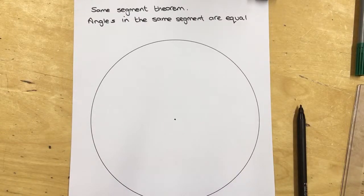We're going to have a look at another circle theorem. This one's the same segment theorem and what we are going to do is we're going to look at one of the rules that we applied to a previous circle theorem.